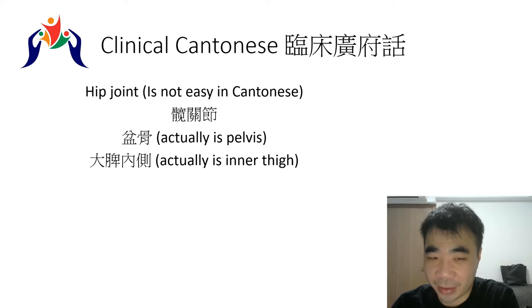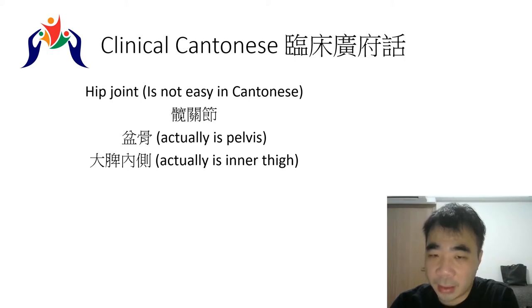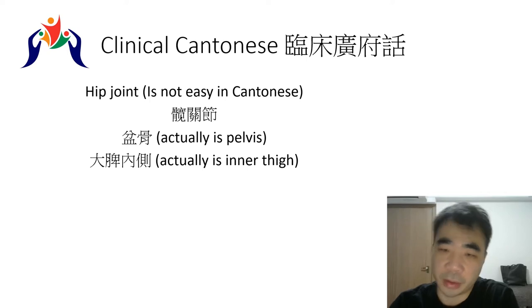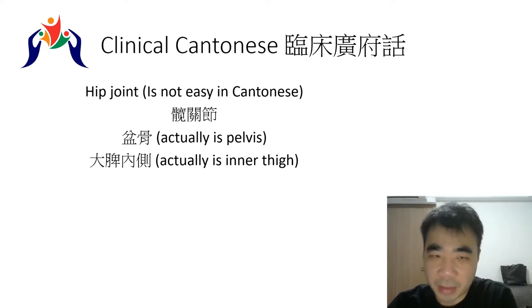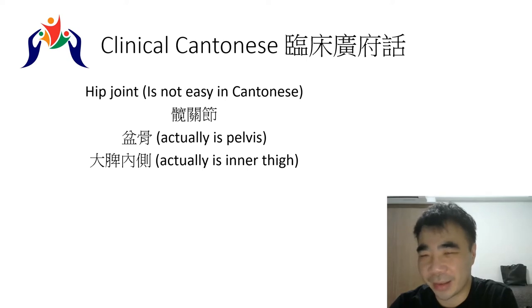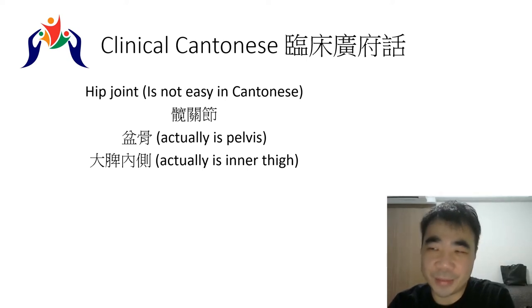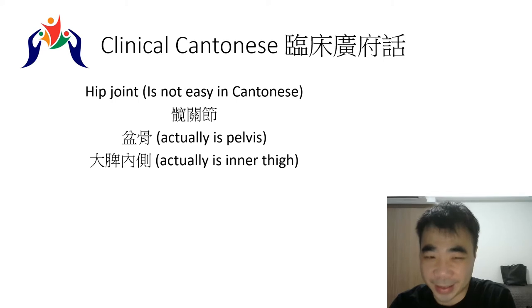In daily life, instead of saying the hip joint directly, people either refer to the pelvic region — 盆骨 (pun gwat) — or they use the inner thigh to represent the hip joint area, saying 大腿內側 (dai tui noi chak), referring to the groin region. That's why hip joint in Cantonese is complicated — we seldom use the academic term and instead use representative terms.